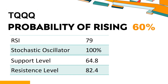The probability of TQQQ share price rising is 60%. When the probability of rising is higher than 50%, the stock has a higher chance of rising. Combining multiple technical analysis indicators, TQQQ has four bullish signals and three bearish signals. TQQQ's short-term support level is 68.7; if it falls below 68.7, it will have a chance to test 64.8. The short-term resistance level is 75.1; if it breaks through 75.1, it will look up to 82.4.